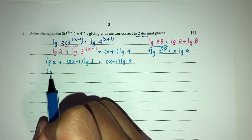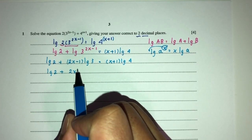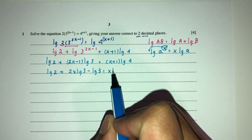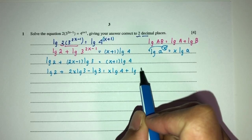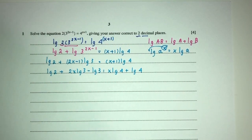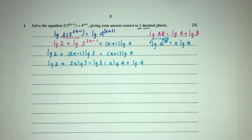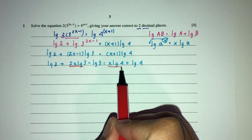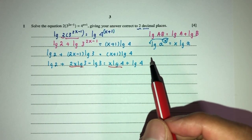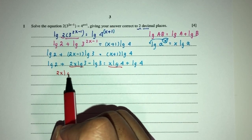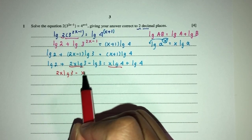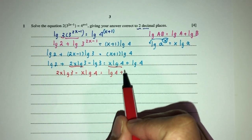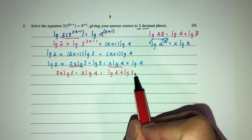Simplify, you will have log of 2 plus, expand, you will have 2x log of 3 minus log of 3 is equal to x log of 4 plus log of 4. Now let's try to simplify and solve this one. So first, we have to send all the x to one side. So let's do this. Here we have 2x log of 3 minus x log of 4. Now everything else go to the other side. Log of 4 plus log of 3 minus log of 2.